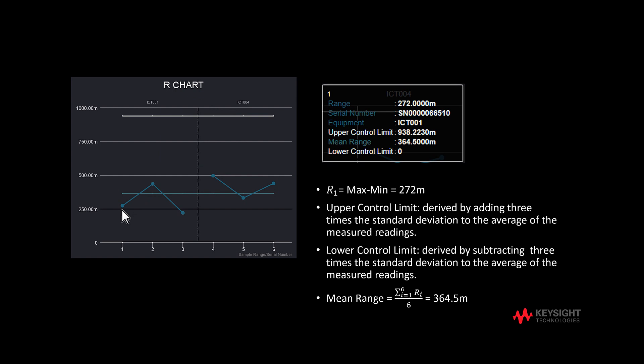R1 is 272 mils, which is the difference between the largest and smallest measured values. We can see the serial number of the DUT and the name of the test equipment. The upper control limit and lower control limit are limits in quality control for data points to be within, to ensure acceptance for the part or product. They are calculated through sampling a subset of readings.